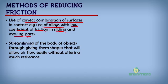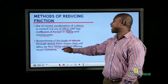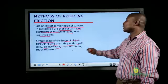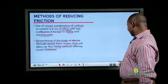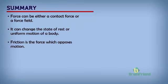Another way we can reduce friction is by streamlining the body of objects, like you have in aeroplanes and jet fighters. When you give them shapes that will allow air to flow easily, there will be less resistance — in this case, resistance that is friction. So streamlining the body of objects to give them shapes that allow air to flow easily without offering much resistance will help to reduce friction.